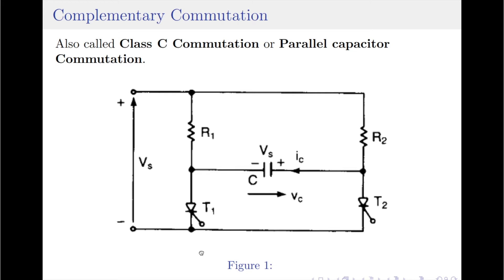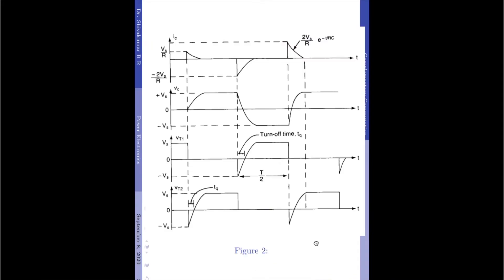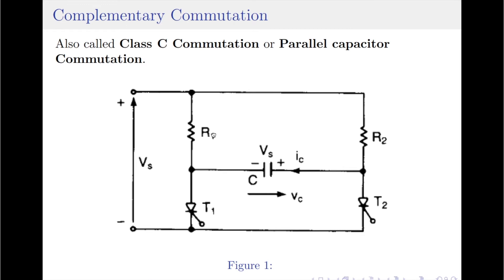Normally, the two thyristors conduct with equal time intervals, and we have the waveforms for the voltages and currents for the pattern where R1 equals R2 equals some load value R. Since each thyristor is switched off due to impulse commutation, this type of commutation is also known as complementary impulse commutation.